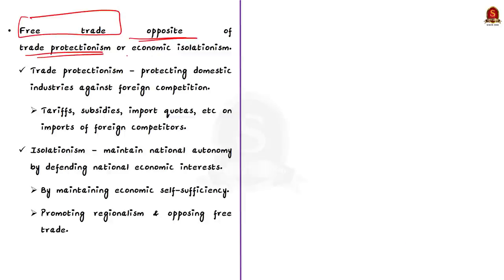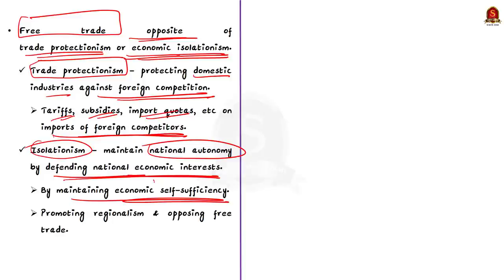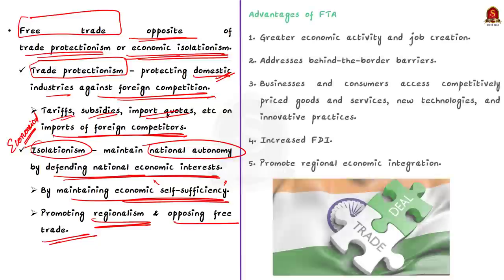The concept of free trade is the opposite of trade protectionism or economic isolationism. Trade protectionism is a policy of protecting domestic industries against foreign competition by means of tariffs, subsidies, import quotas, or other restrictions placed on imports. Economic isolationism aims to maintain national autonomy by defending national economic interest, maintaining economic self-sufficiency, promoting regionalism, and opposing free trade. In essence, economic isolationism means being economically self-sufficient, while trade protectionism involves protecting domestic industries by imposing trade restrictions.